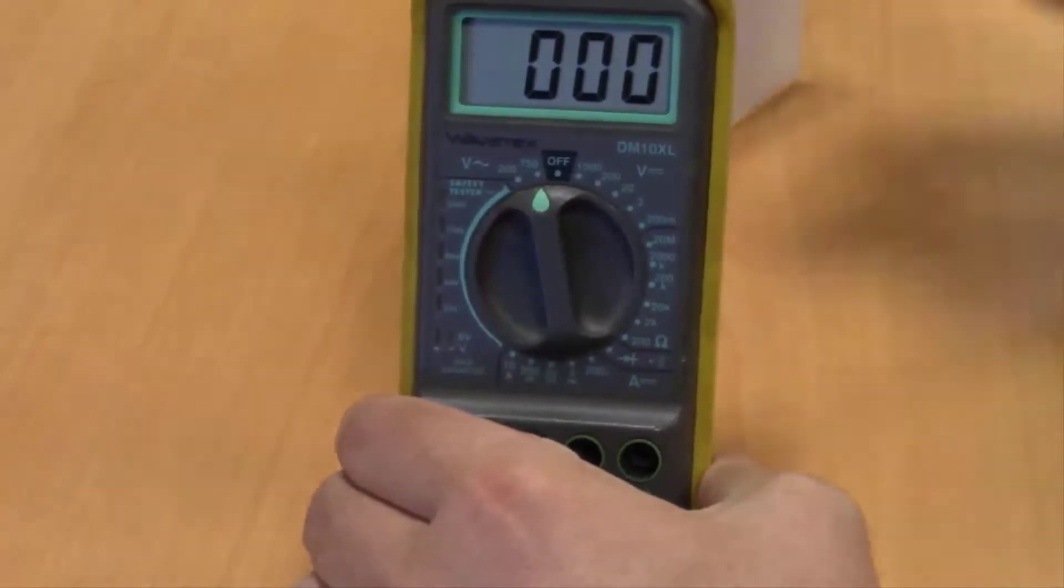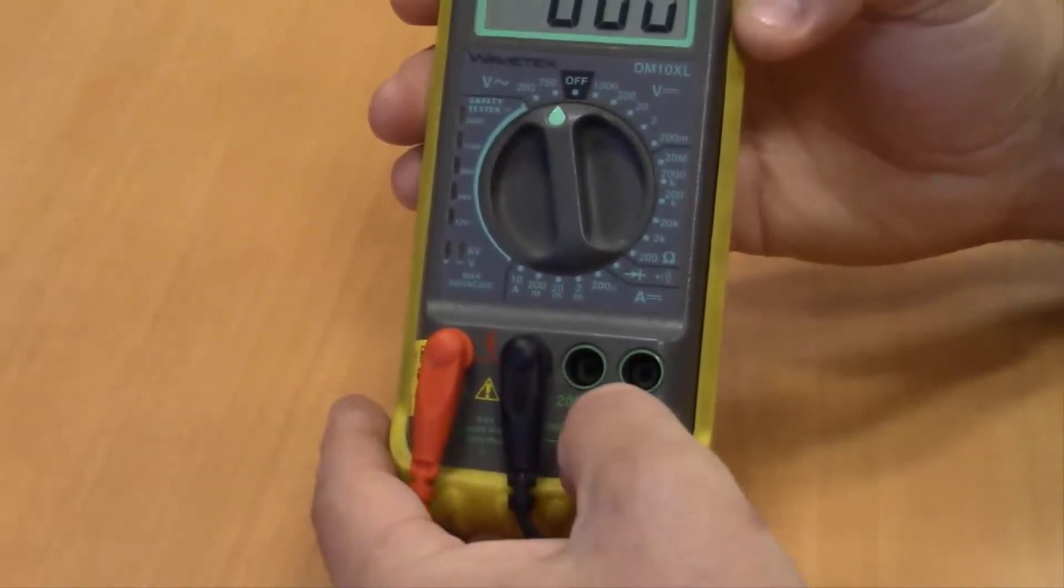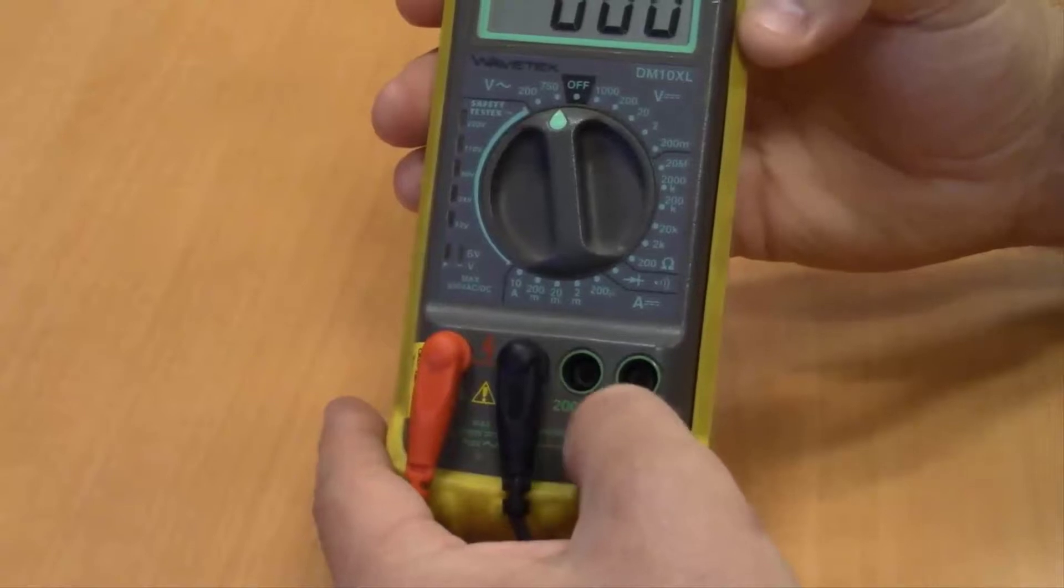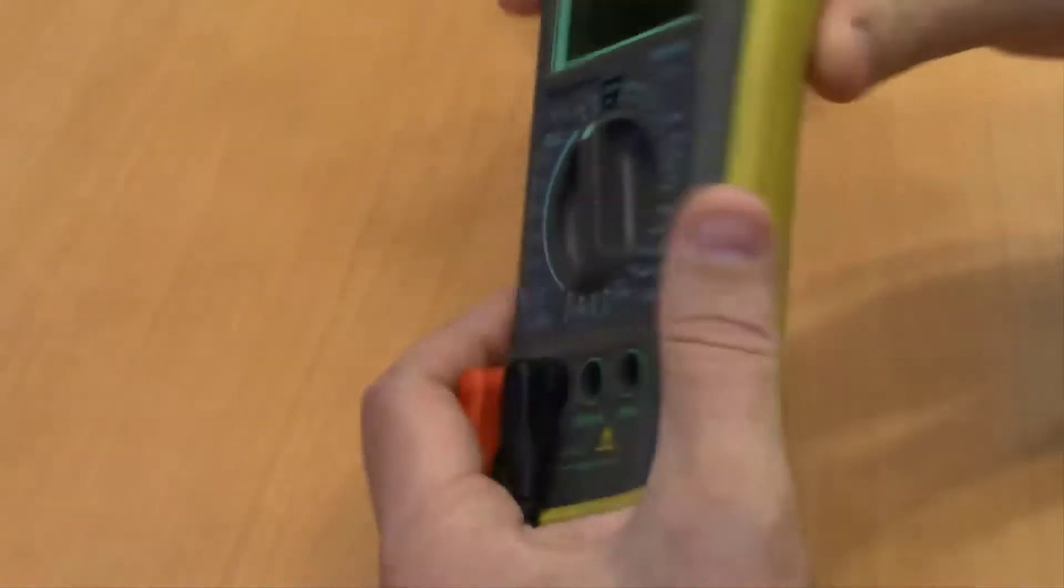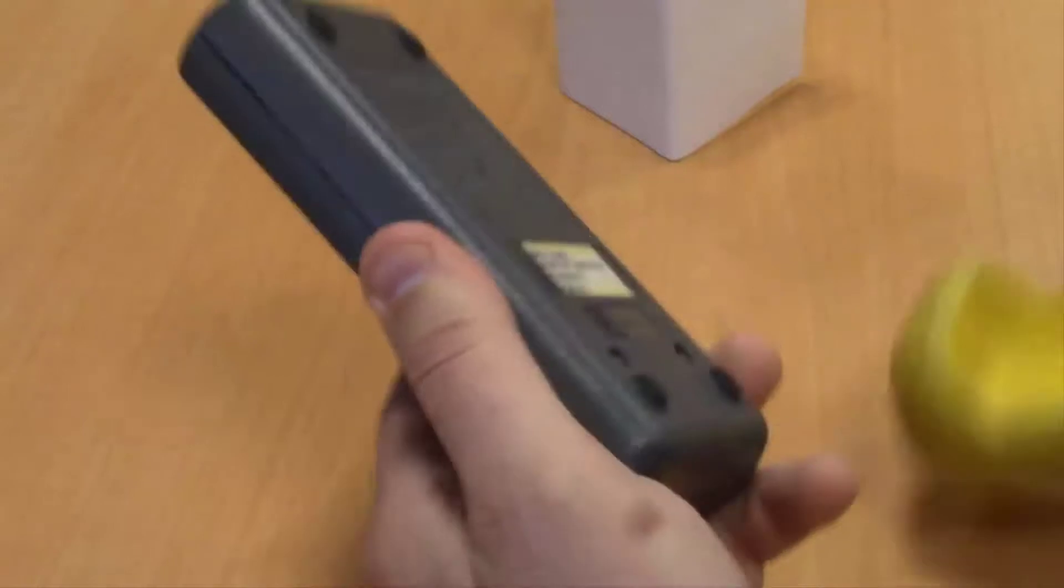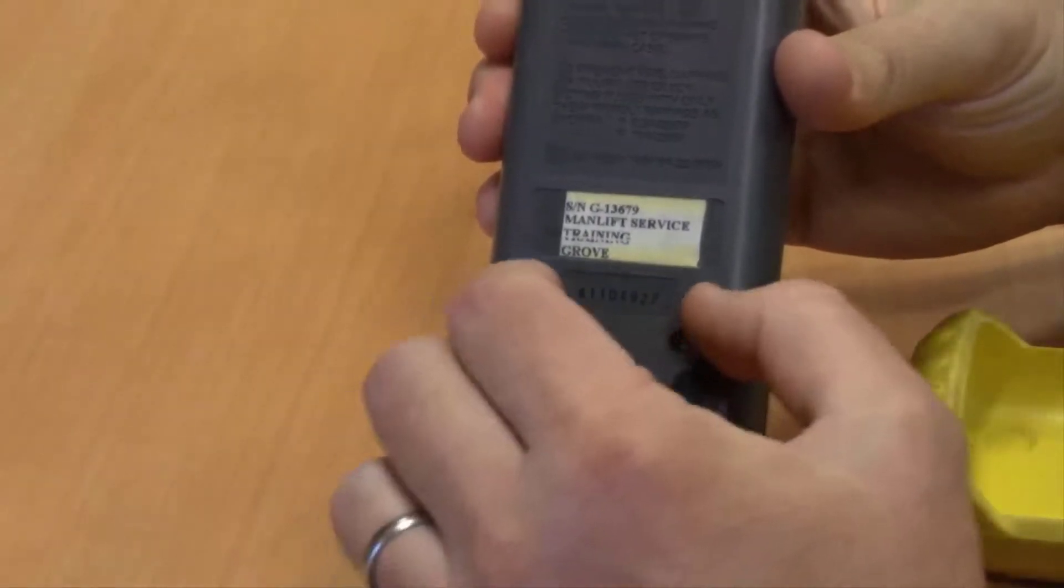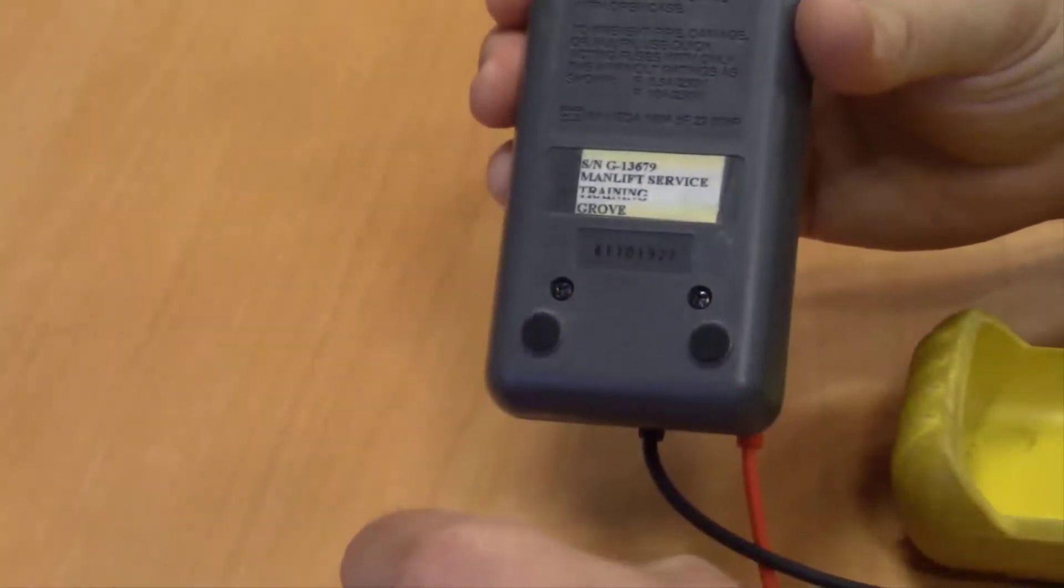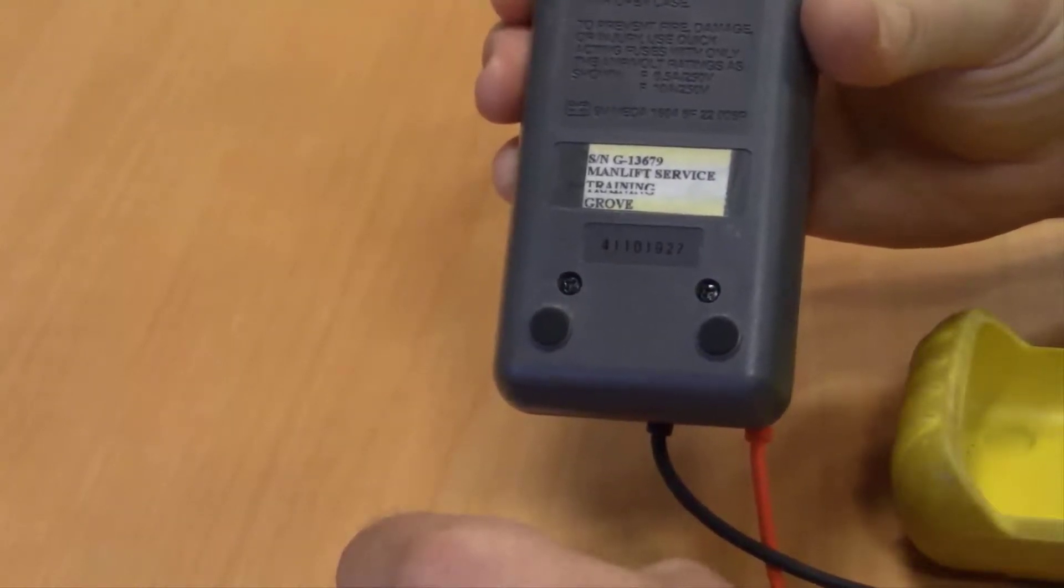And as with any other meter it does have fuses to protect the amperage readings and it does have a 9-volt battery. If those need replaced you would take off the back cover. Again there are screws. You remove the screws and you would be able to access that 9-volt battery and those fuses if you needed to do so.